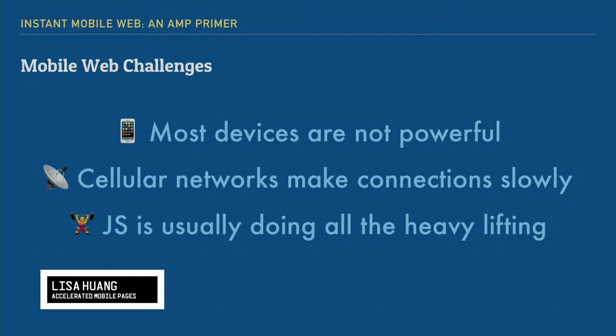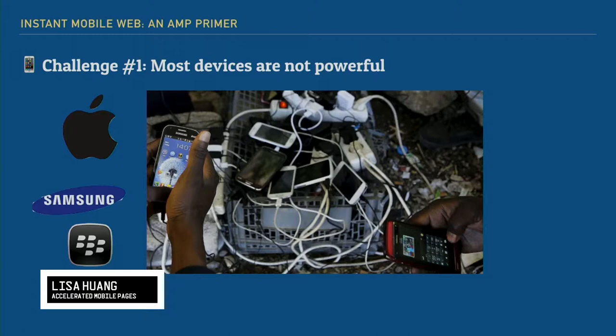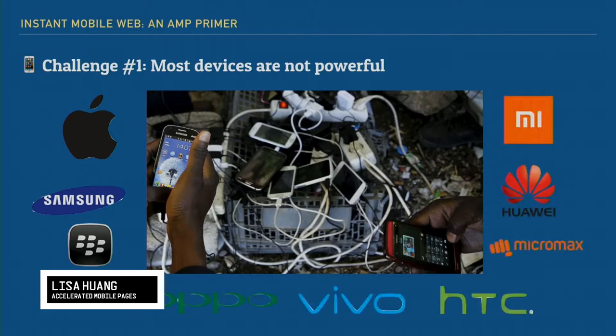Second challenge is that cellular networks are very slow. Building for a web app is very different from building for something on Wi-Fi or a desktop app. And finally, JavaScript is doing all the heavy lifting. You've probably heard of different frameworks — from Angular, React, Ember, Meteor — they're getting more popular and doing a lot of work for us. Now, how many of you know these companies? They are super popular in Africa because they have a focus on budget phones.